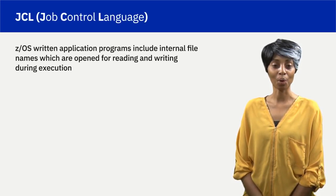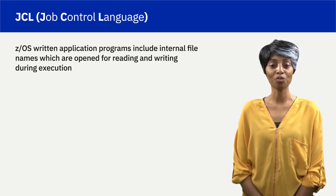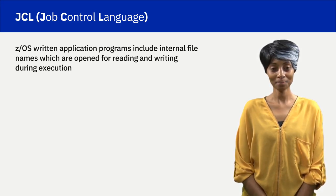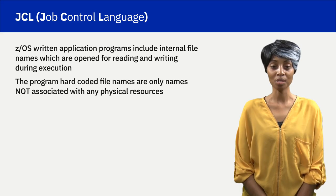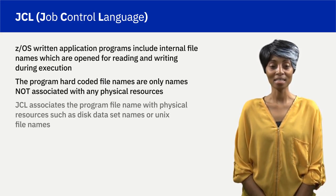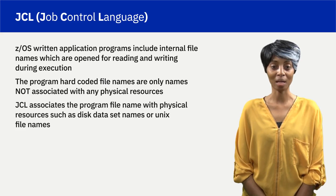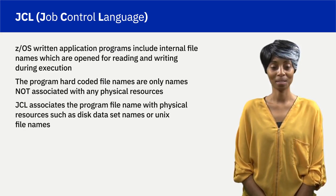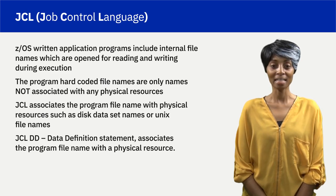ZOS written application programs include internal file names, which are open for reading and writing during execution. The program hard-coded file names are only names not associated with any physical resources. JCL associates the program file name with physical resources such as disk dataset names or UNIX file names. The JCL DD, or data definition statement, associates the program file name with a physical resource.